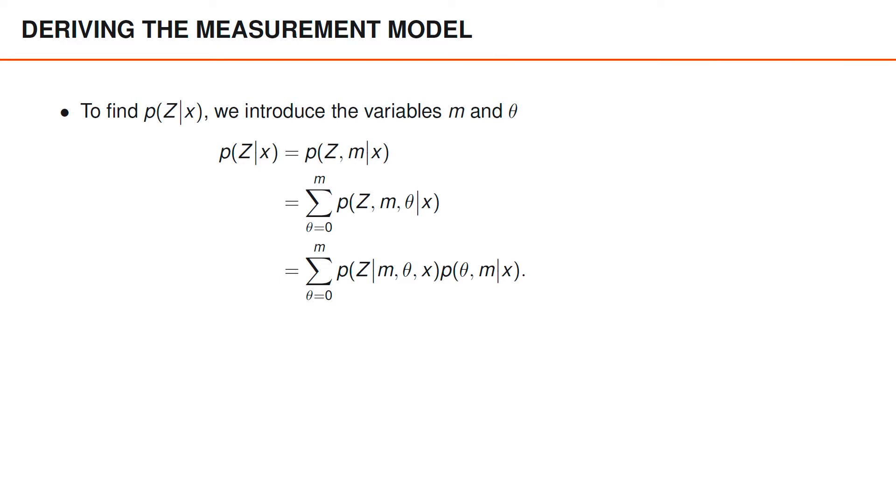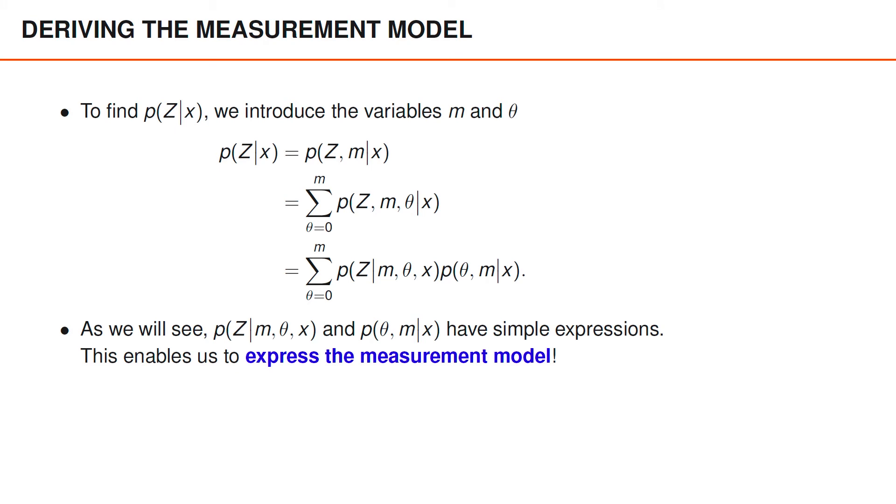We have argued that this distribution should be easy to express. Apart from that factor, we obtain a second factor that does not contain z, which is the distribution of m and theta given x. We will refer to this as our prior on m and theta, since it is the distribution of these variables before observing z. Fortunately, it's relatively straightforward to express both of these distributions, and by doing this we find a complete measurement model that we can use in our filters.